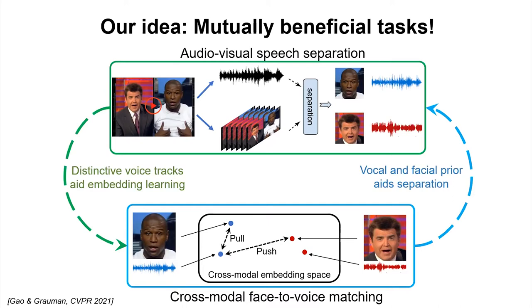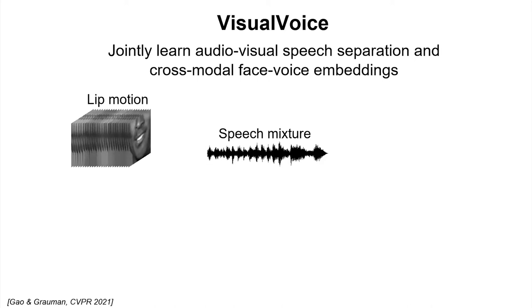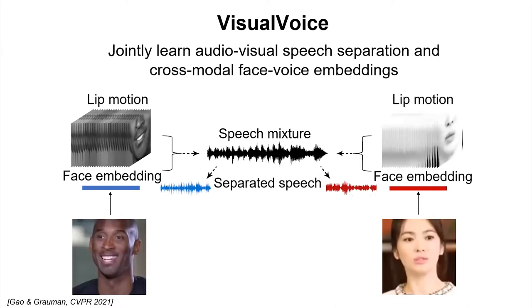If we've done a good job separating speech into different soundtracks, we can learn better face-voice embeddings from clean audio streams. Conversely, if we've learned good embeddings where faces appear near their voice counterparts, we can do separation more easily. We call this idea Visual Voice — hearing the voice while using a visual prior of the speaker to filter for their voice only — jointly training for AV speech separation and cross-modal face-voice embeddings.